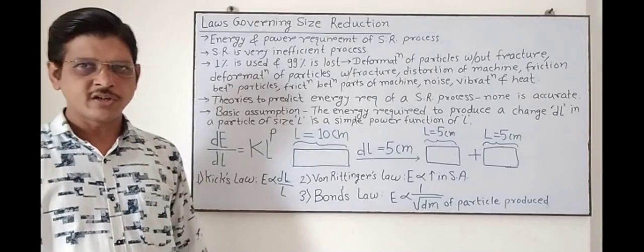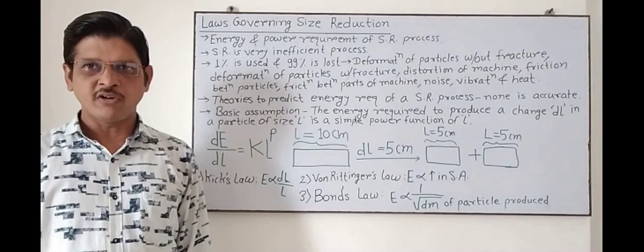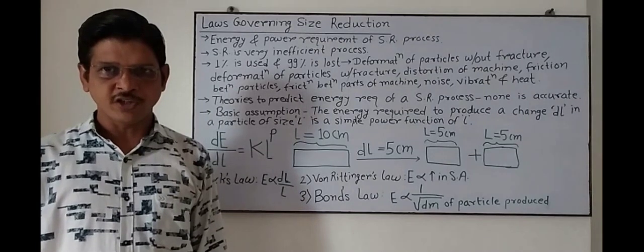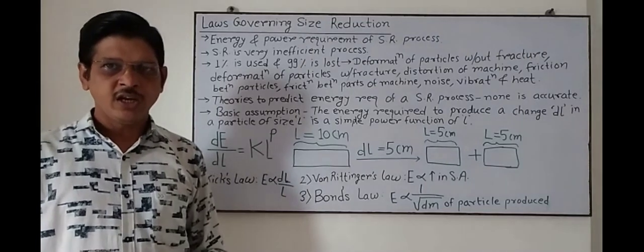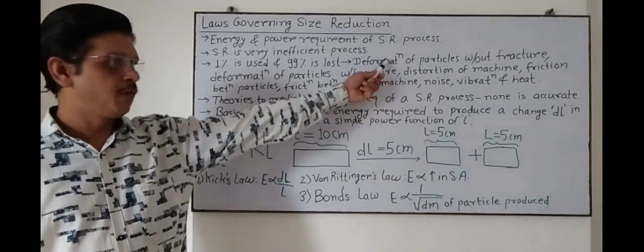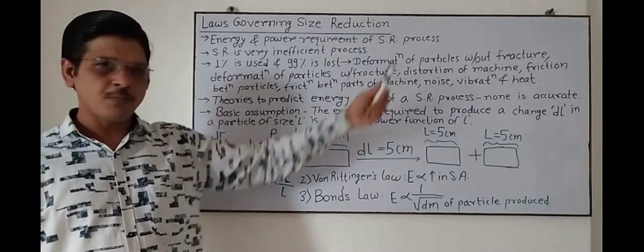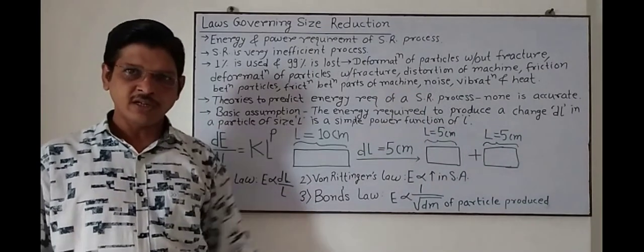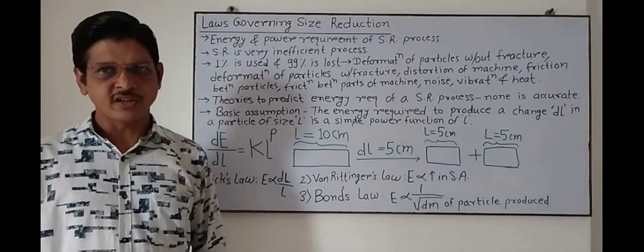Now let's discuss laws governing size reduction. These laws are about the energy and power requirement of the size reduction process. Size reduction is a very energy inefficient process. Whatever energy we put into the machine, only 1% of it is used in the process of size reduction. The remaining 99% is lost through deformation of particles with fracture, deformation of particles without fracture, distortion of machine, friction between particles, friction between machine parts, noise, vibration, and heat.